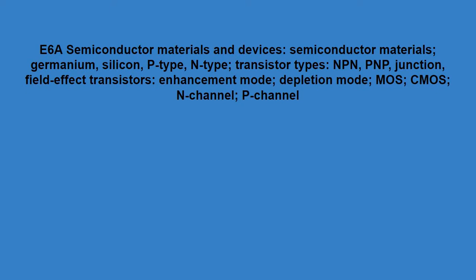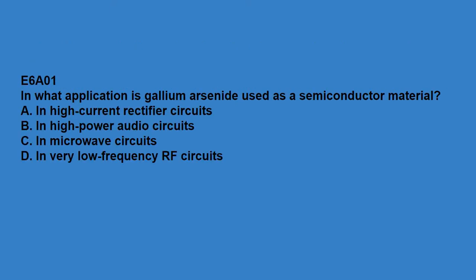E6A: semiconductor materials and devices — semiconductor materials including germanium, silicon, P-type, N-type; transistor types including NPN, PNP, junction, field-effect transistors; enhancement mode, depletion mode, MOS, CMOS, N-channel, P-channel.